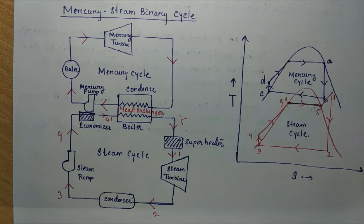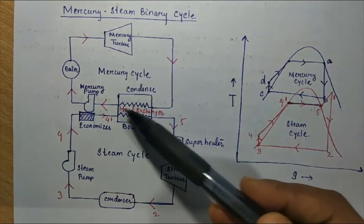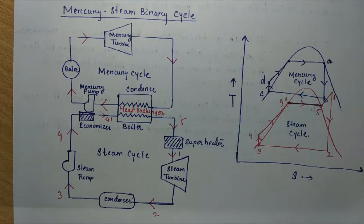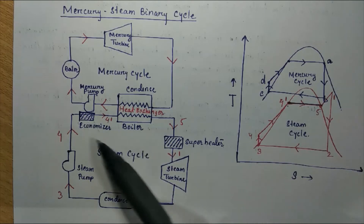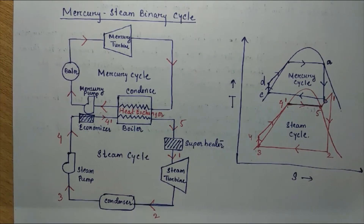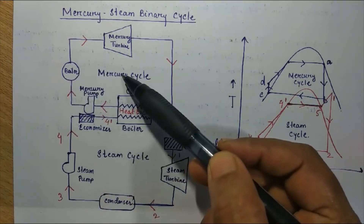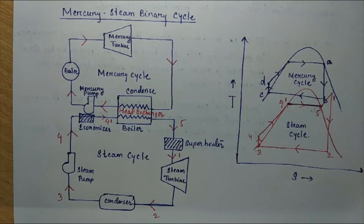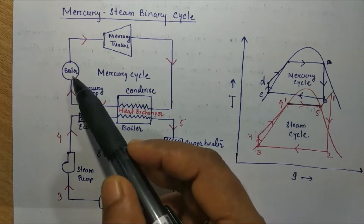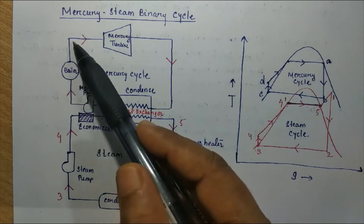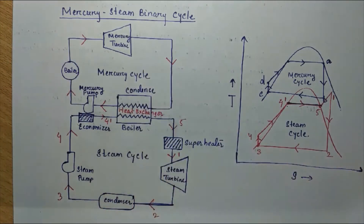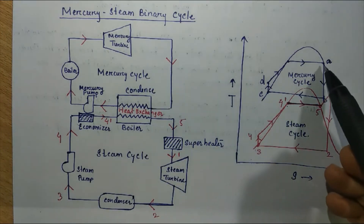For the mercury cycle, the same components are used: boiler, turbine, condenser, and pump. The functions are just similar to the steam cycle. In this steam cycle, two more components are added — economizer and superheater — which we will discuss later on.